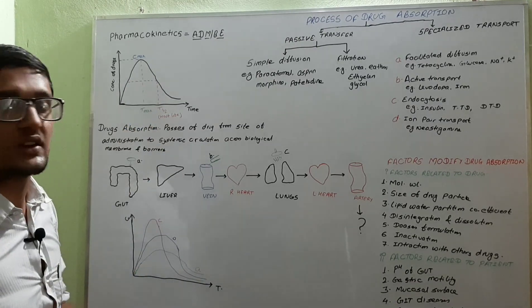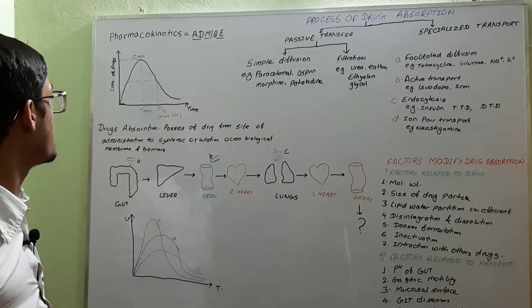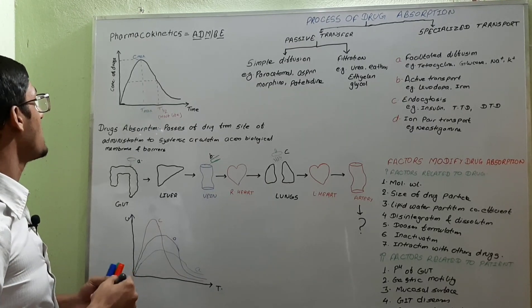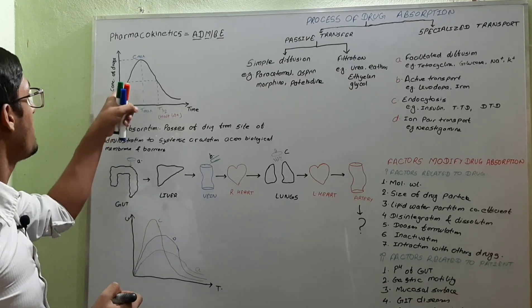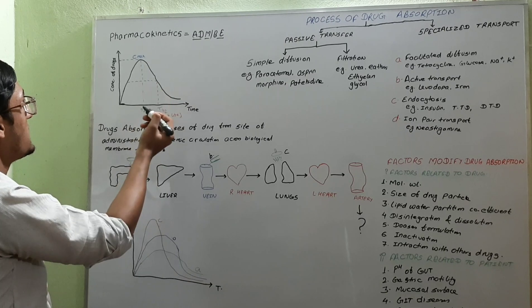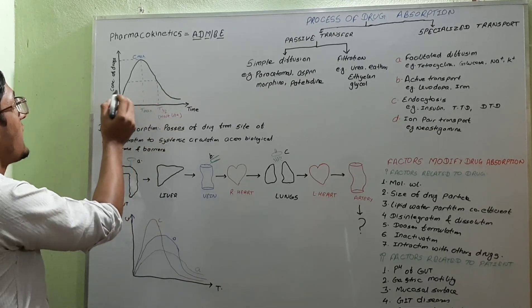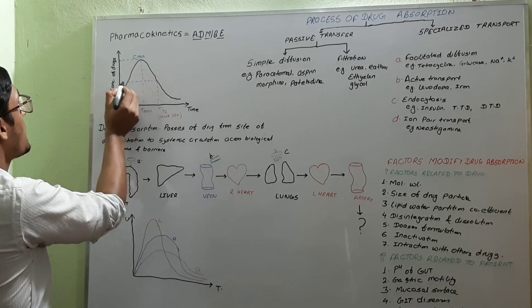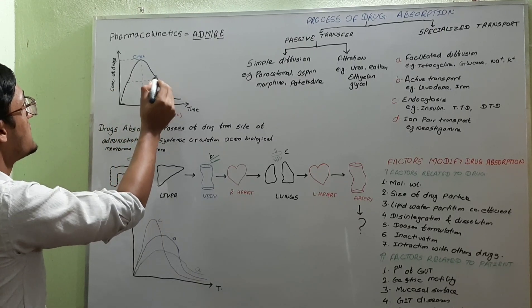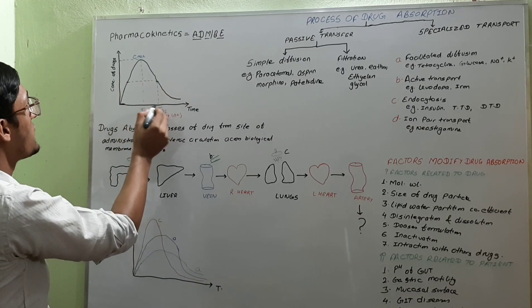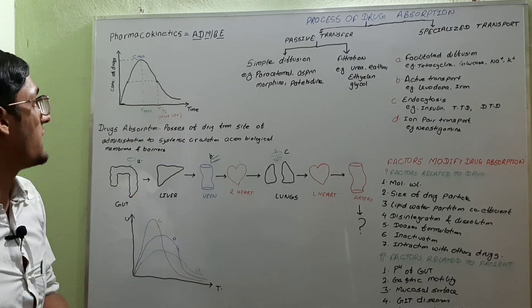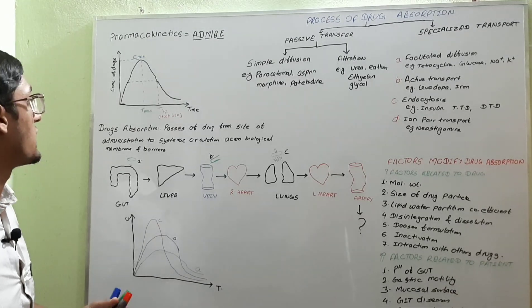Now, the half-life of the drug — by definition, half-life means the time for the concentration of the drug in plasma to become half, or elimination of the drug from the body to become half. In this graph, the concentration of the drug becomes half from this point, and that time represents the half-life of the drug. There are about 4 to 5 half-lives required for complete elimination of the drug.